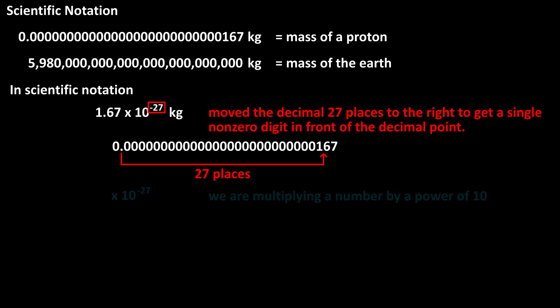We use the term 'times 10 to a power' because we are multiplying a number by a power of 10 to get it in scientific notation and make it easier to comprehend.